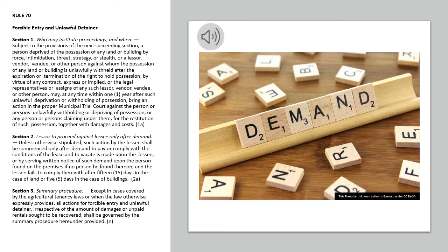Rule 70. Forcible Entry and Unlawful Detainer. Section 1. Who May Institute Proceedings, and When.